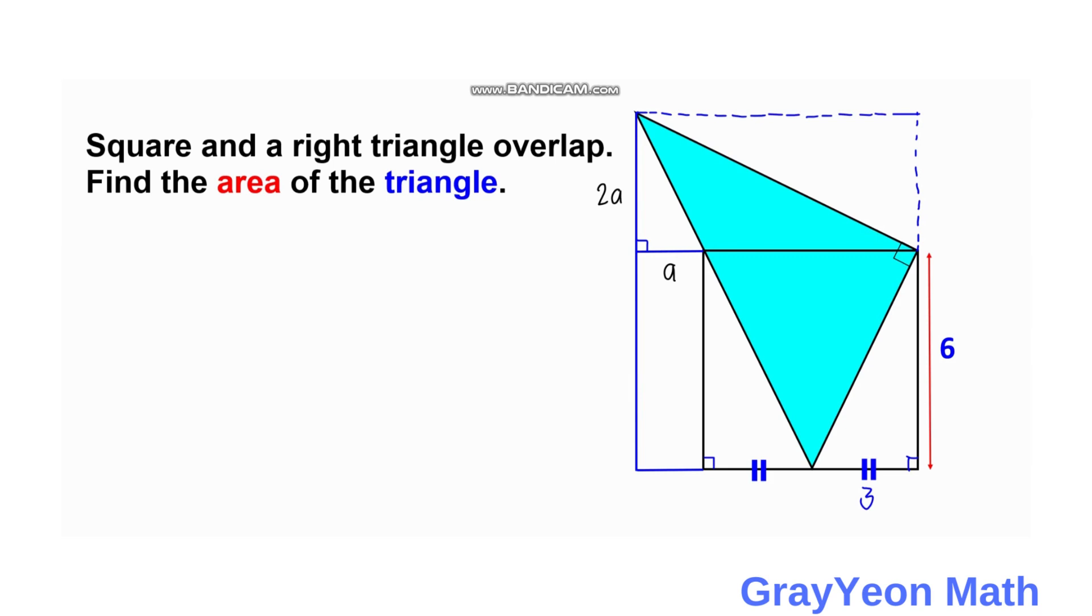And this length is actually, since this side of the square is 6, then this should be 6 plus A. And if you divide that, then this length is actually as a ratio also of 2 is to 1. So this becomes 3 plus A over 2.